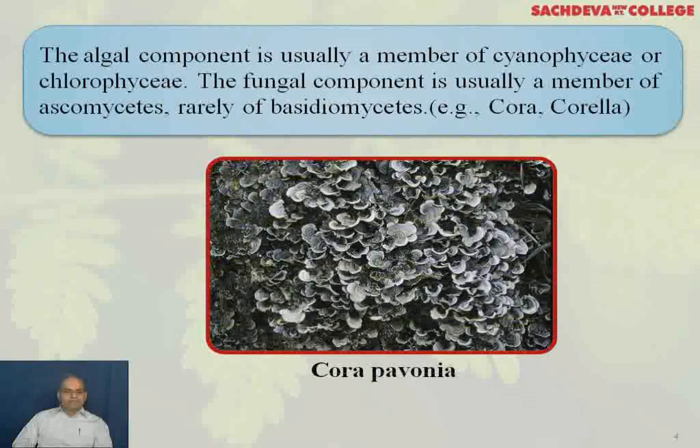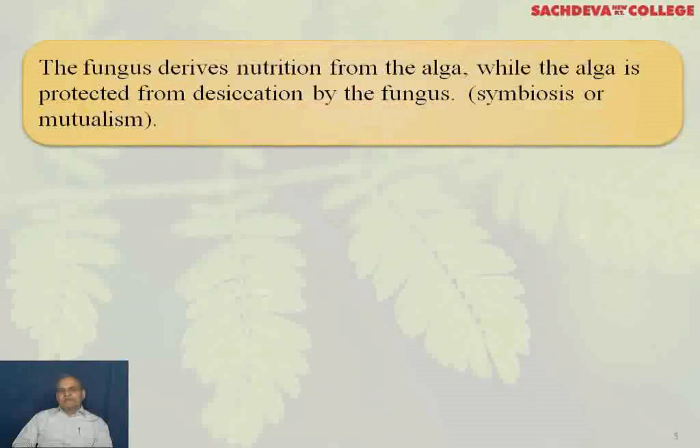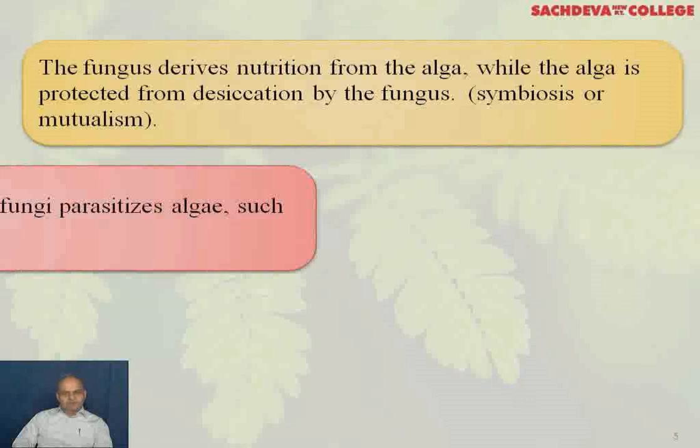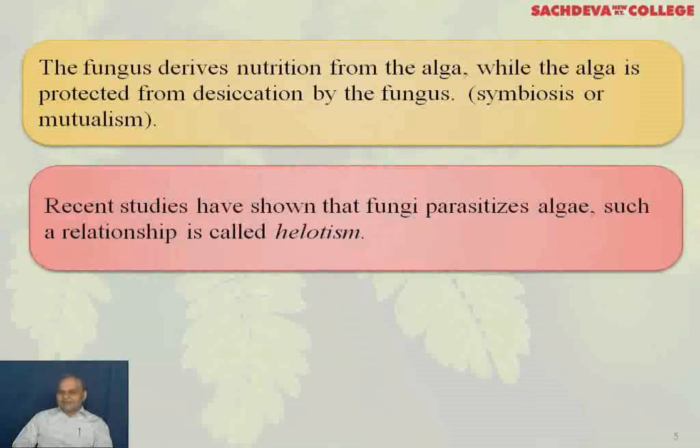The fungus derives nutrition from the alga, while the alga is protected from desiccation by the fungus. So it is a type of symbiosis or mutualism. However, recent studies have shown that the fungus parasitizes the algae, and such a relationship is called helotism, or a master and slave relationship.